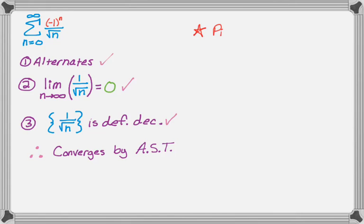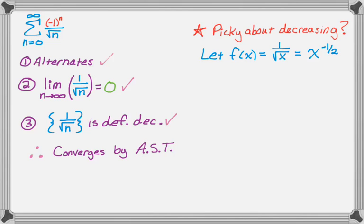What if you want to be really picky though about that decreasing part? The decreasing part is usually the worst part. So if we're going to be picky about it being decreasing, what we're going to do is let f of x equal 1 over radical x, which is x to the negative 1 half. And then we'll do the sort of calc 1 way of showing something decreases. Take a derivative and get negative 1 half x to the negative 3 halves, which we can rewrite as negative 1 over 2x to the 3 halves. So the denominator there is always positive, so we have a negative over a positive, definitely less than 0.